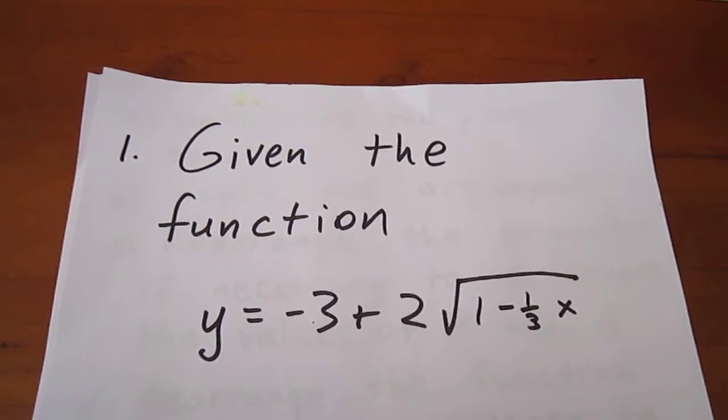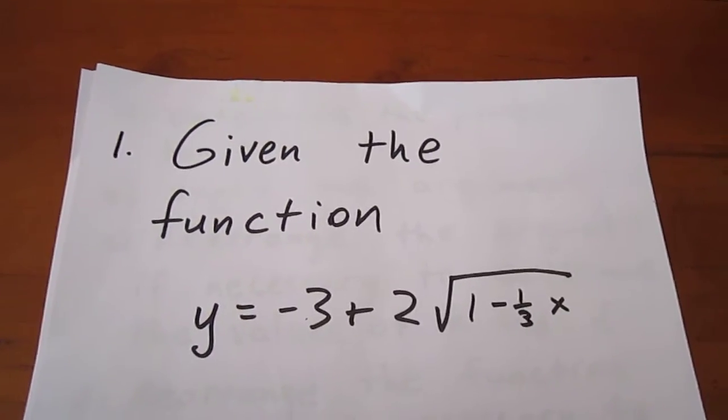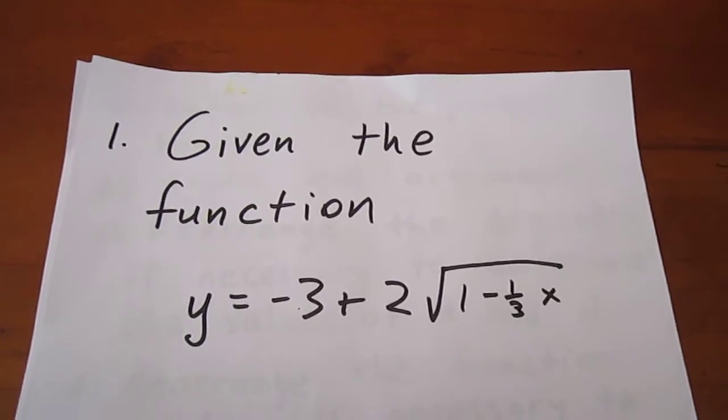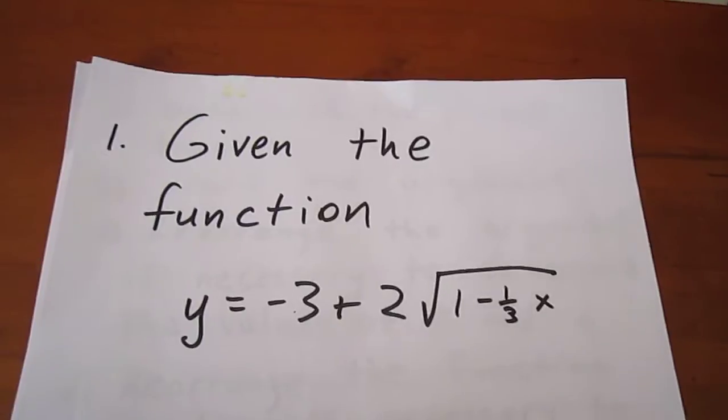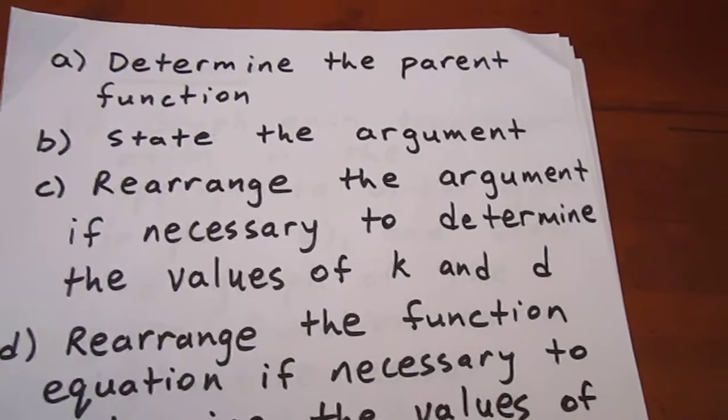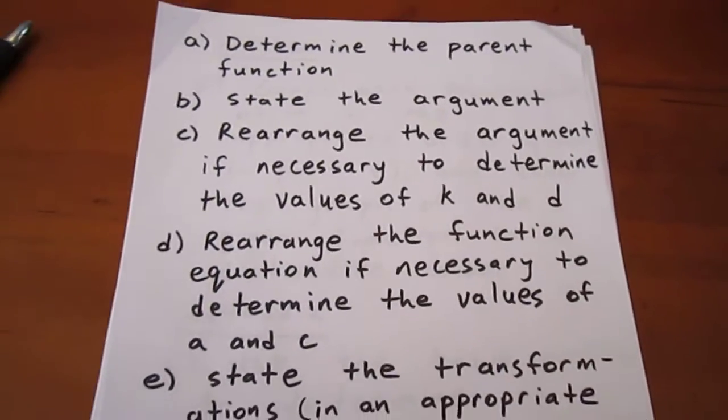We're given the function y equals negative 3 plus 2 times the square root of 1 minus one-third x, and we're asked to graph the function, but first to do certain other steps. We need to take a disciplined approach to this.